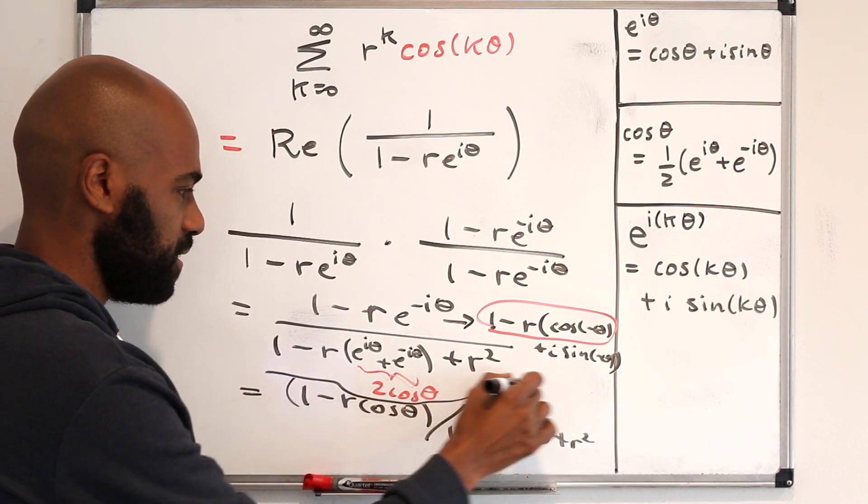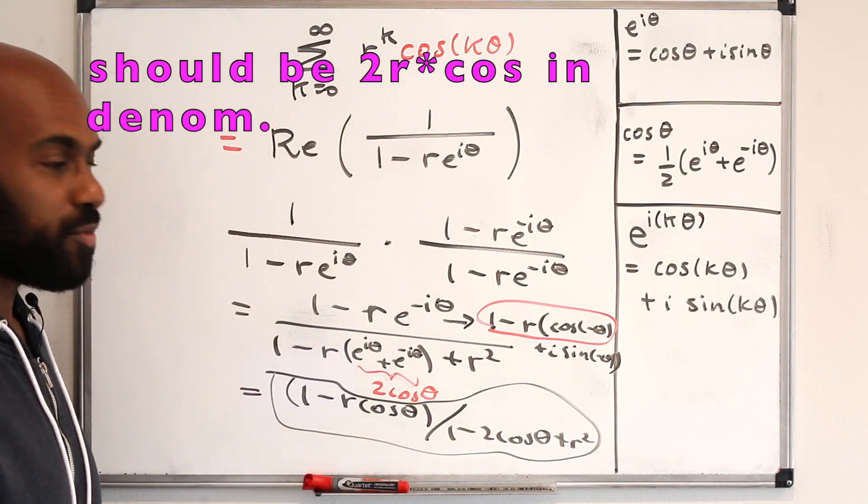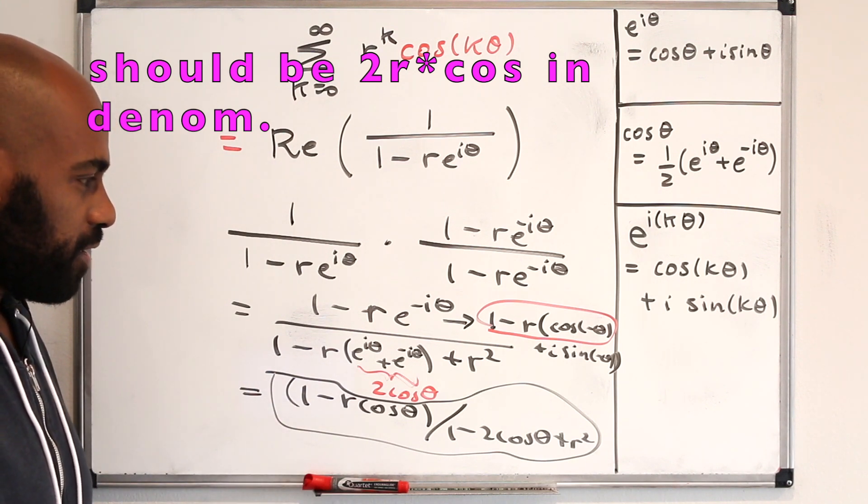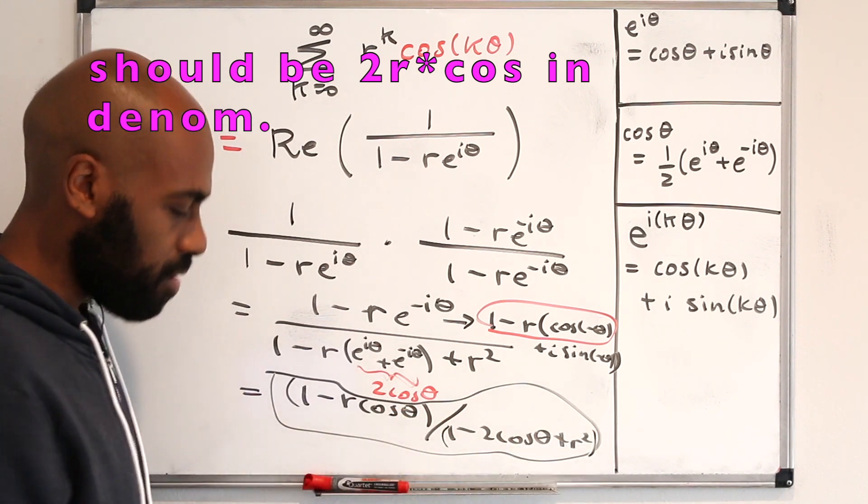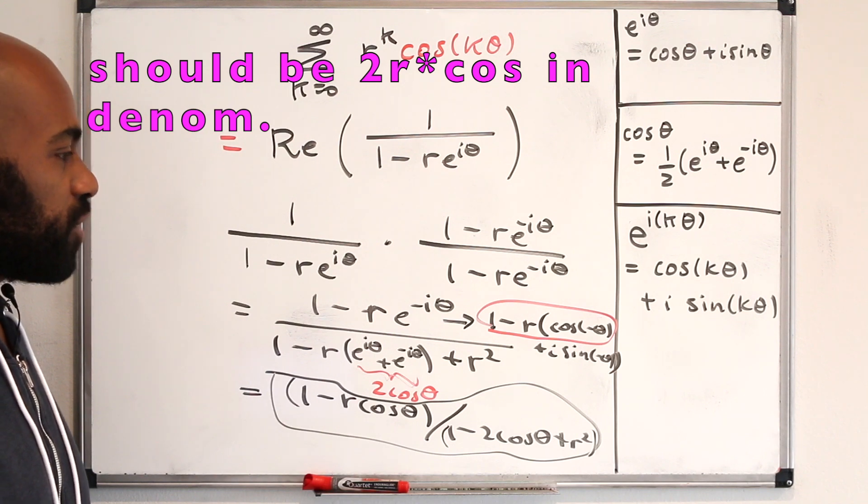And so here is the nice final form for this entire sum right here, written explicitly as a real number in terms of r and theta. And it has a really nice form if you take a look at it. It depends solely on r and theta and doesn't write itself in some weird and strange way.